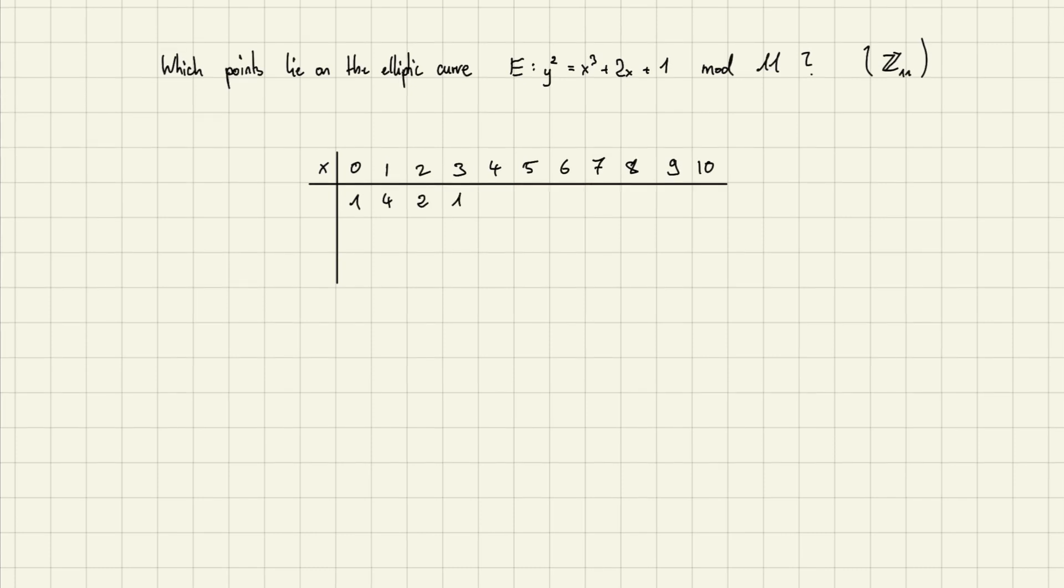We just do the regular addition and multiplications and then take mod 11 at the end. So 0³ + 2(0) + 1 is 1, and 1³ + 2(1) + 1 is 4, and 2³ + 2(2) + 1 is 13, and 13 mod 11 is 2, and so on.